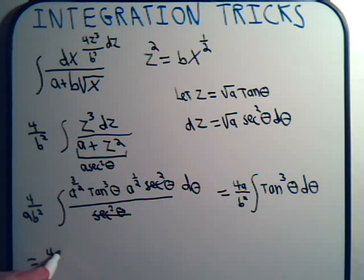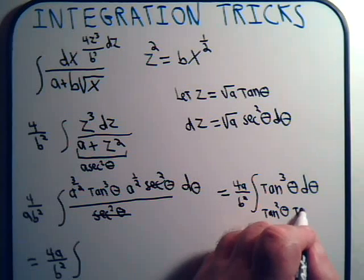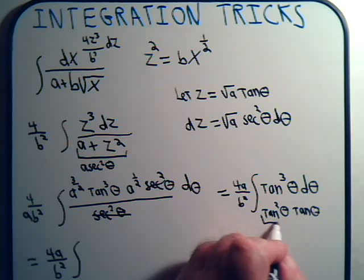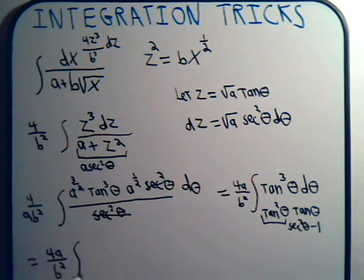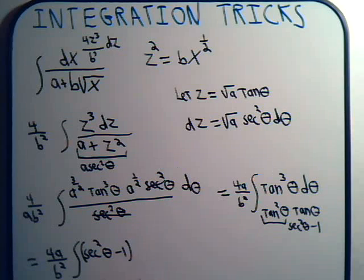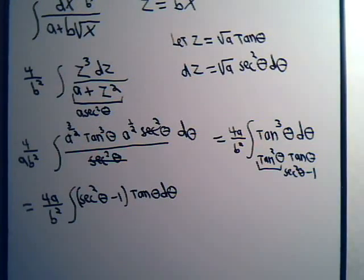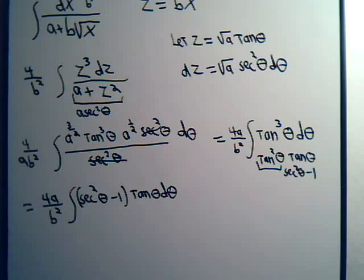We have 4a over b squared, and we break tangent cubed into tangent squared of theta times tangent of theta. Then tangent squared of theta equals secant squared theta minus 1. So this becomes the integral of secant squared of theta minus 1, times tangent of theta d-theta. That's just our integral rewritten using the trig identity: tan squared theta equals sec squared theta minus 1.